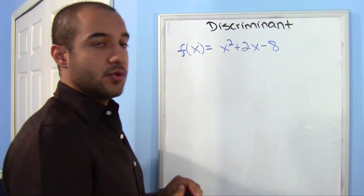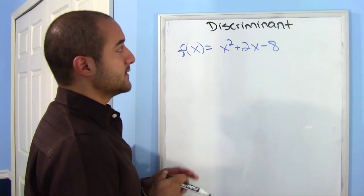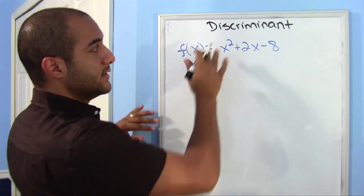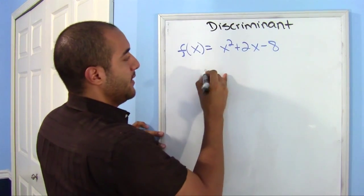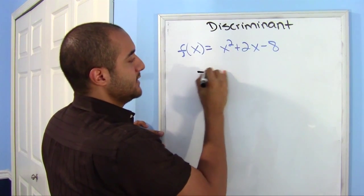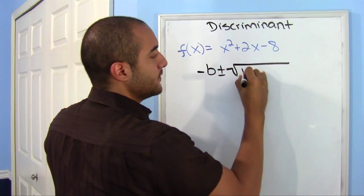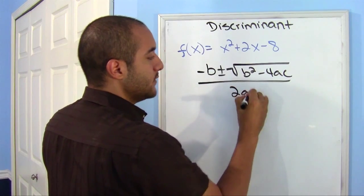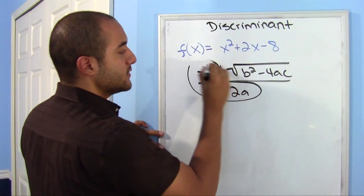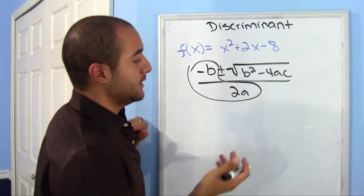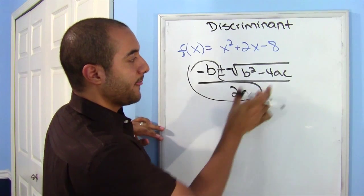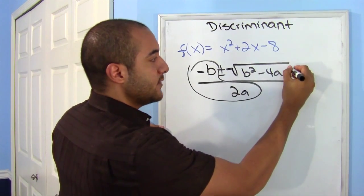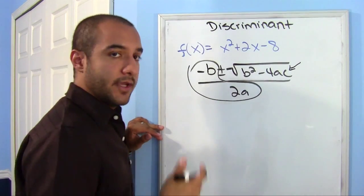There is something in the quadratic formula that lets us know this. That's why it's called the discriminant. Remember, our quadratic formula looks like this: negative b plus or minus the square root of b squared minus 4ac over 2a. Remember, earlier we used this to find the x-coordinate for a vertex. This right here is very important, this is actually where we get our discriminant from.